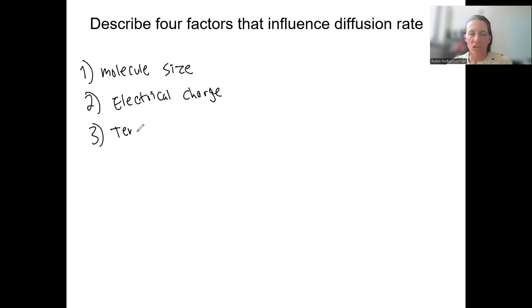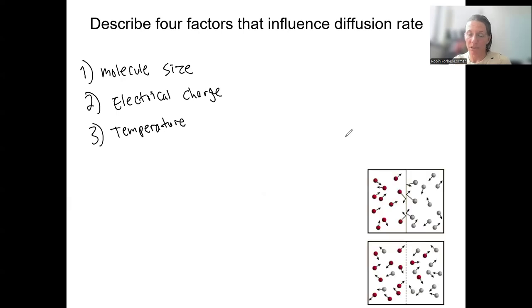Next one is temperature. This is something that doesn't vary in our bodies typically. But you know about kinetic energy. When you heat something up, molecules move around more quickly. That's really what's happening when we have diffusion happening.